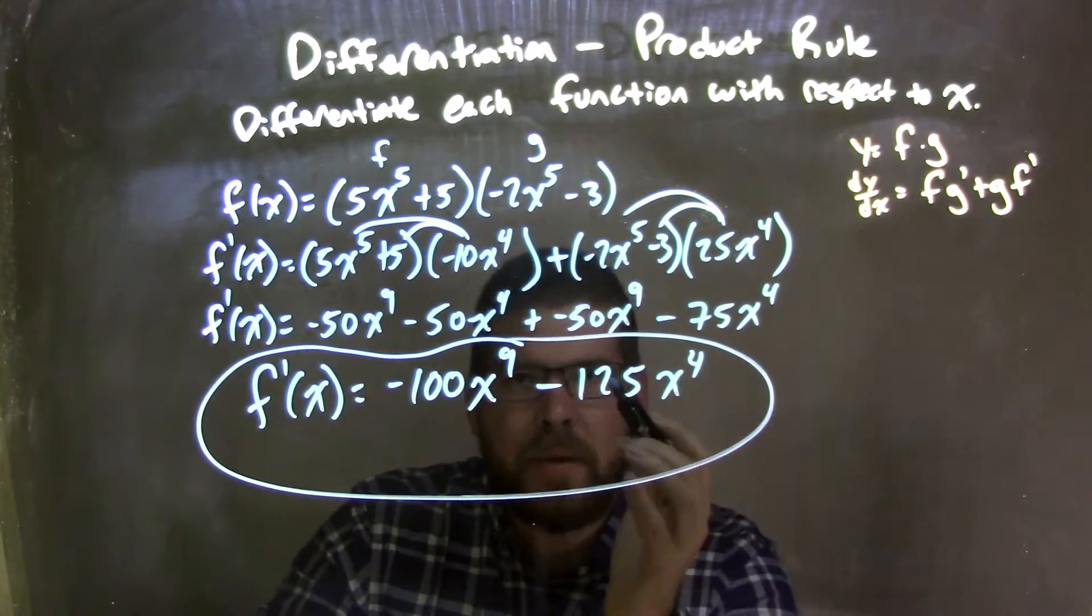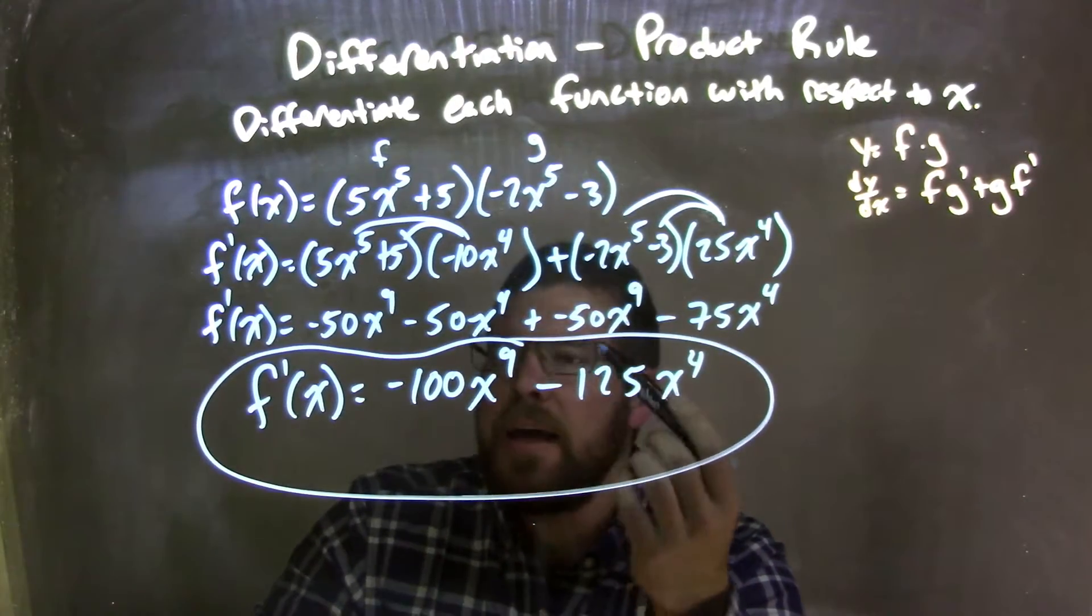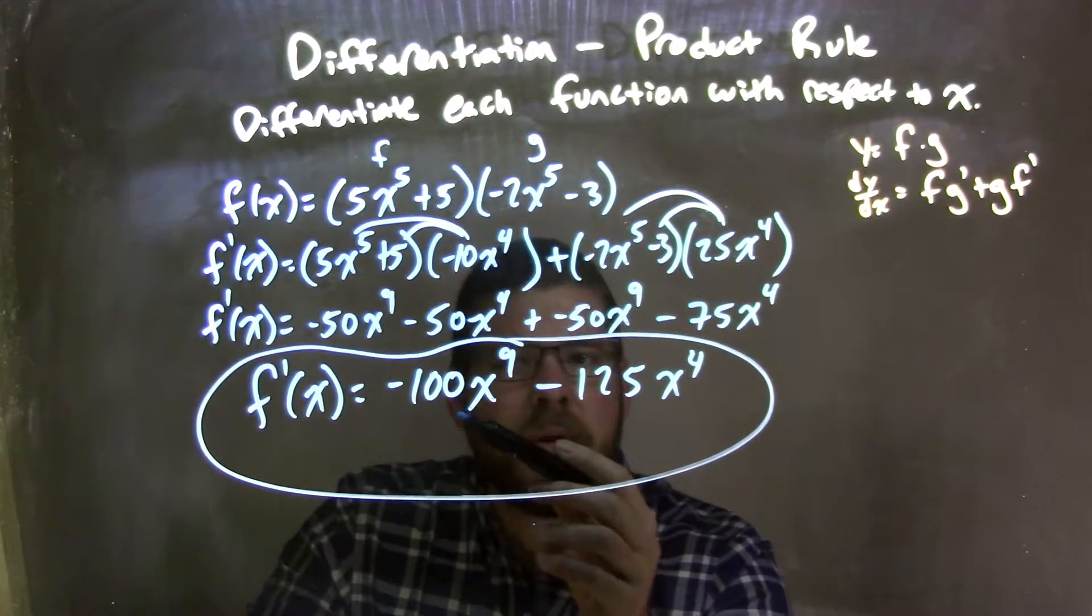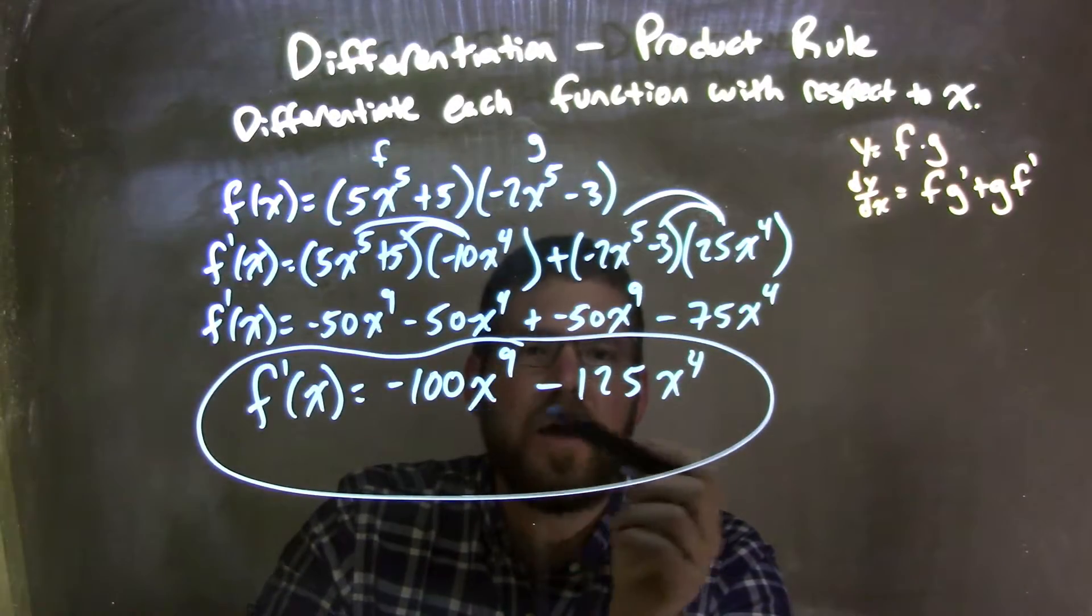Then I re-simplified and combined my like terms with the highest degrees first, giving me my final answer, which is f prime of x is equal to negative 100x to the ninth minus 125x to the fourth.